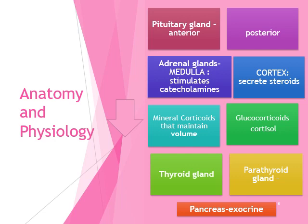The pituitary gland has an anterior portion and a posterior portion that releases hormones. The adrenal glands have the medulla, which stimulates catecholamines — our fight-or-flight responses — and then the cortex releases steroids. Steroids do some things for our body we're going to talk about, such as mineralocorticoids that maintain volume in our body — relating to our kidneys — aldosterone, angiotensin, ADH, and glucocorticoids, which is our cortisol or corticortisone. Then our thyroid gland, parathyroid gland, and pancreas — which is also an endocrine and exocrine gland.